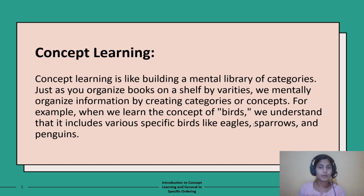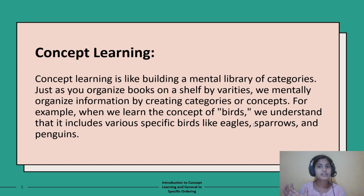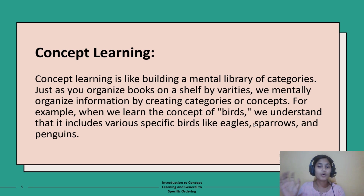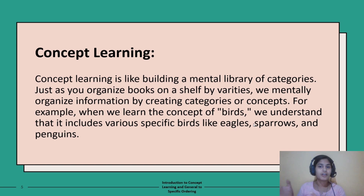After that, you decide to learn more about birds. You search online or read books, and then you create another shelf named 'Birds' where you keep everything about birds — this is the specialized shelf. First you learned about it and kept the book in a general category; now you know more, so you keep it in a specialized shelf only for birds. Then you learn about specific birds like eagle or sparrow, and you create individual shelves named after each bird containing all their specific information.